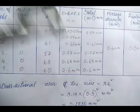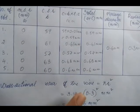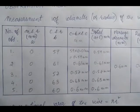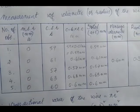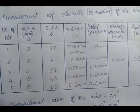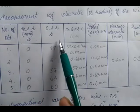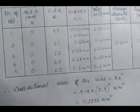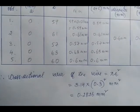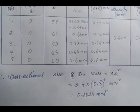To summarize: first calculate the pitch, then the least count, then place the wire between the two jaws and record the main scale reading and circular scale reading. The mathematics gives the diameter and radius. The cross-sectional area of the wire is π r² = π × (0.3)² = 0.2826 mm². This is how you find the cross-sectional area of a given wire using a screw gauge.